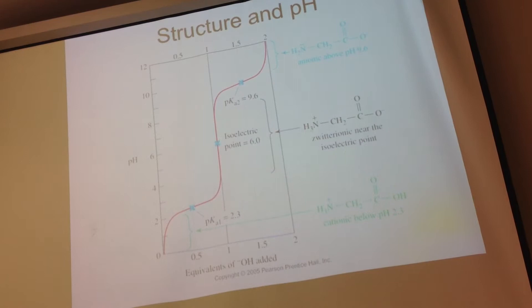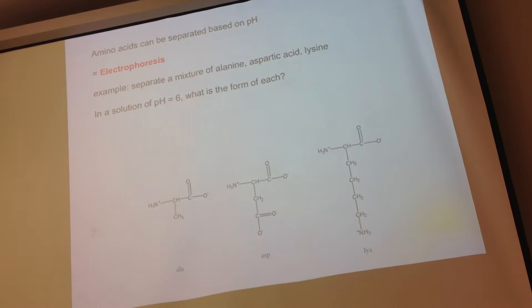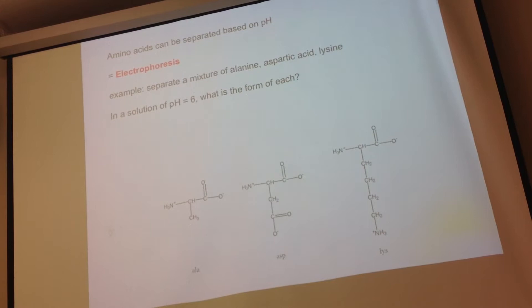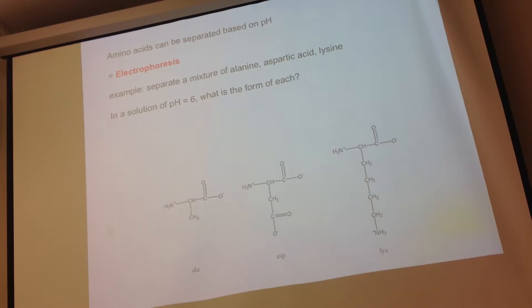The next topic involves electrophoresis — some of you have probably done this in biology class. What you can do is use electrophoresis to separate a mixture of amino acids. You put them in a buffer on a gel and choose a pH such that different amino acids have different charge states. One might have a positive charge, another is neutral at its pI, and a third has a negative charge. Then you separate them based on charge by applying a voltage to the plate.